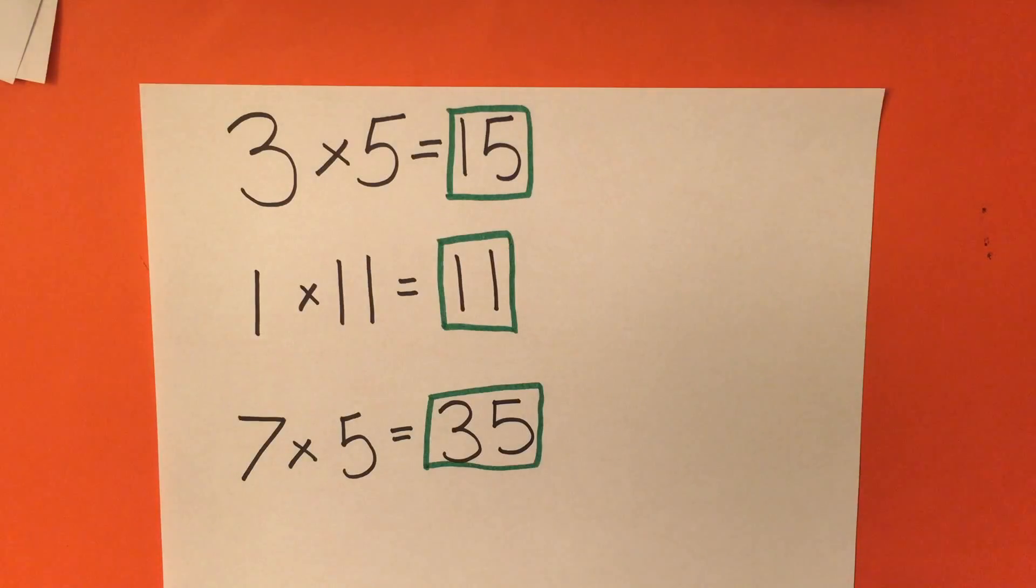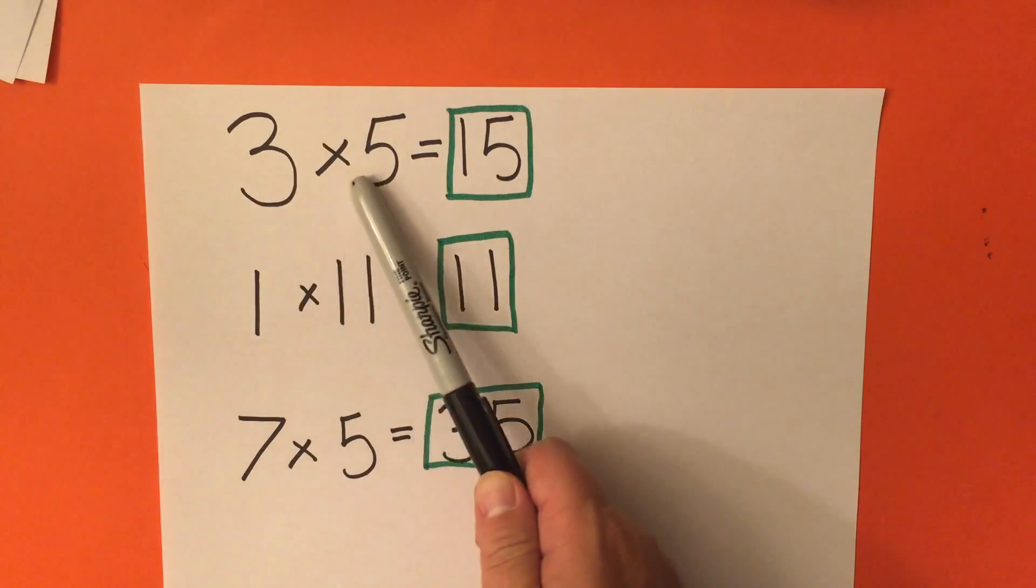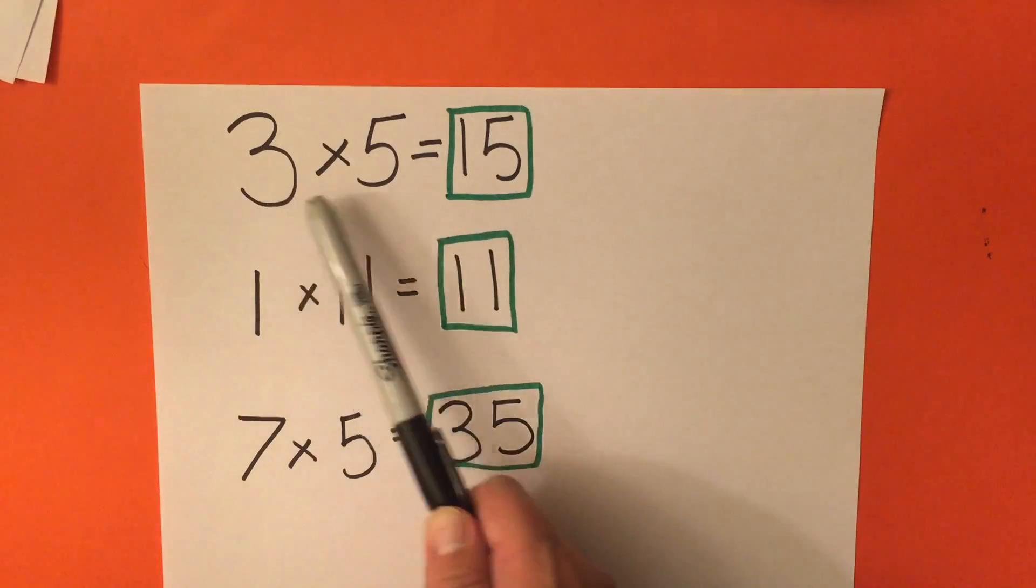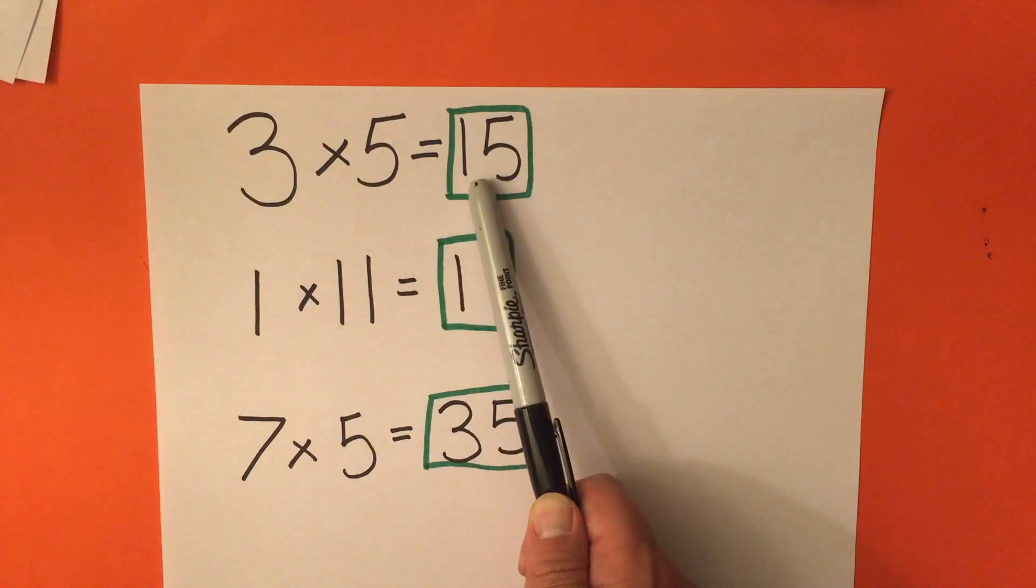Now, let's take a look at three more examples. Once again, we have 3 times 5 equals 15. We have our two factors here, and our answer, or our multiple, here.